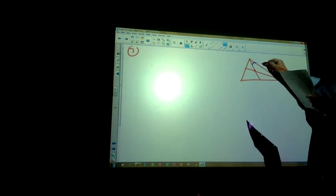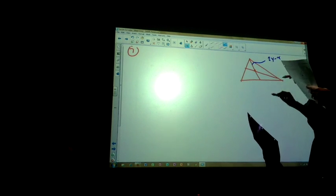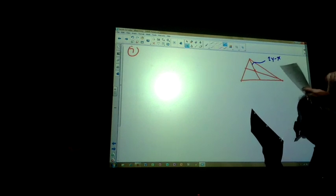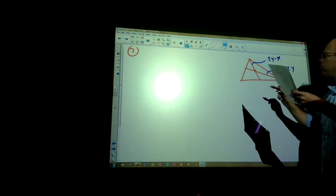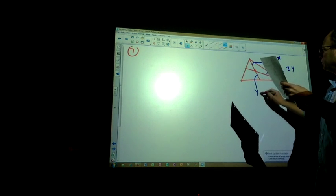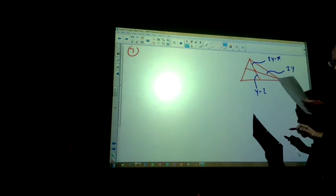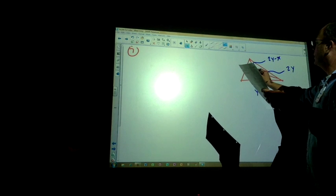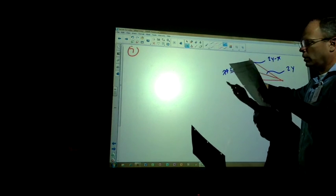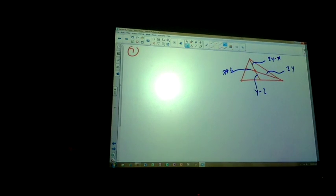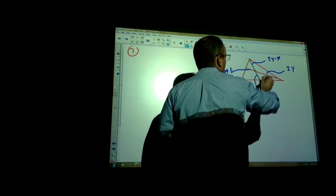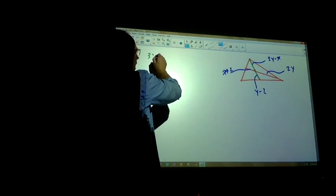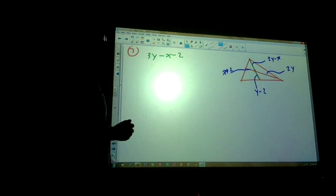So our P, this distance here is two Y minus X. And then TP, this one here is two Y, and then PM. Okay, so we want to find X and Y, solve that for X and Y. I know that this entire distance here, if I add those two together, I'm going to get three Y minus X minus two.